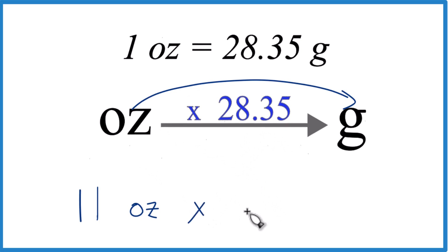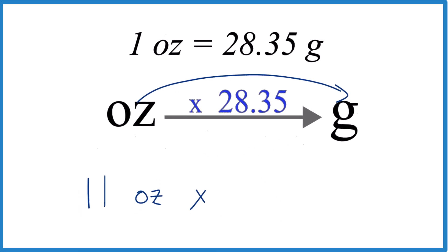11 ounces times that 28.35 grams, and that's grams per ounce. Like up here, we have 28.35 grams in one ounce. So that's our conversion factor.